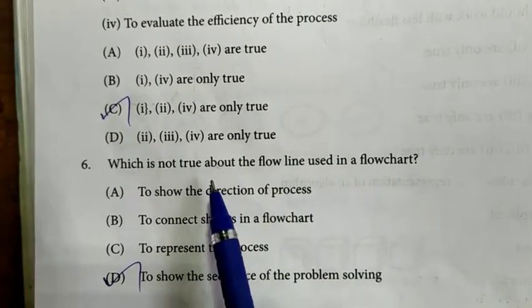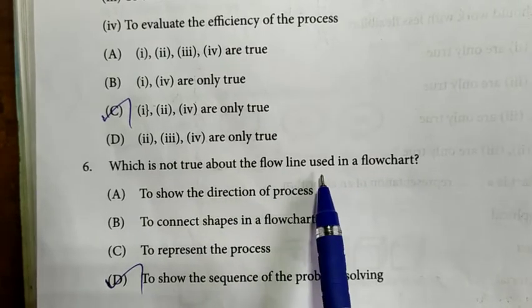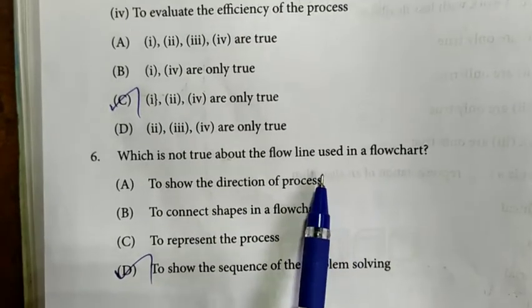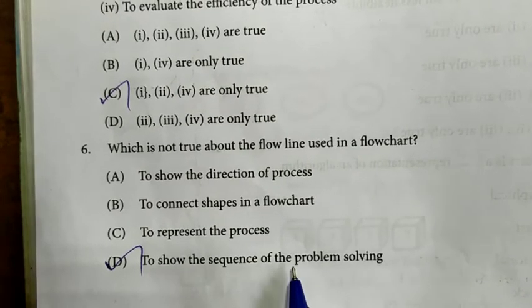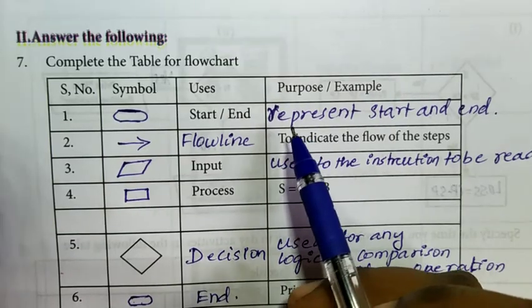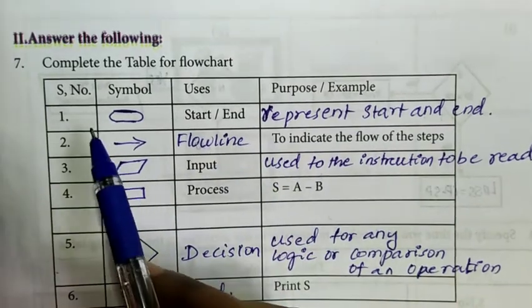Sixth question: Which is not true about the flowline used in a flowchart? Answer is option D: To show the sequence of the problem solving. Second roman letter, answer the following.